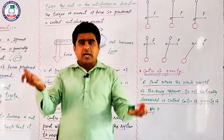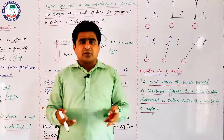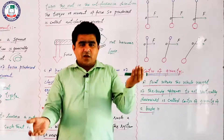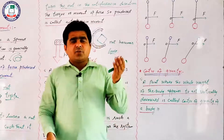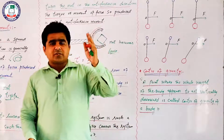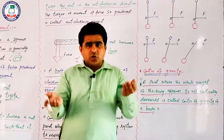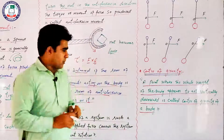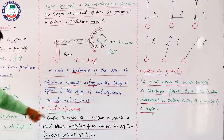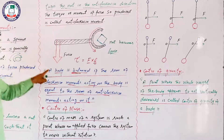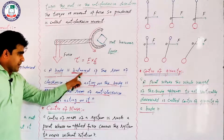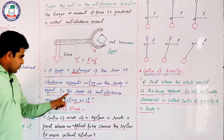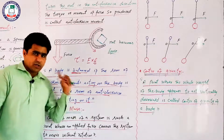Seesaw game का example लें — दो बच्चे दोनों साइड पर बैठे हैं। एक clockwise moment act करता है, दूसरा anti-clockwise। वो balance तब होते हैं जब clockwise और anti-clockwise moment दोनों बराबर हों — इसी को हम Principle of Moments कहते हैं। Definition: A body is balanced if the sum of clockwise moments acting on it is equal to the sum of anti-clockwise moments acting on it।